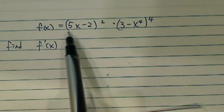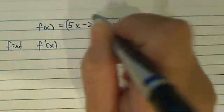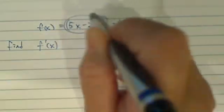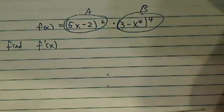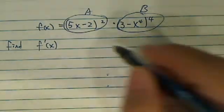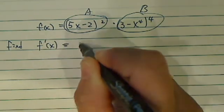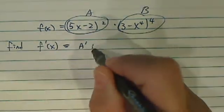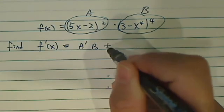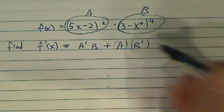To find the derivative of a product, the easiest thing to do is separate it into two terms. We're going to call this term A and this term B. The derivative of this product is then A derivative times B, plus leave A alone, times B derivative.